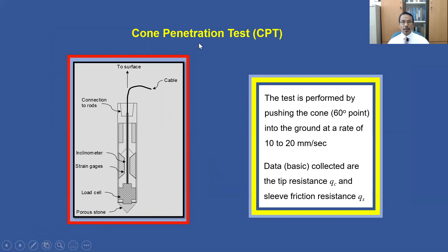Another method that can be employed is what we call Cone Penetration Test, CPT, or some people call it the Dutch cone. Principally, a cone like this is pushed into the ground at a rate of 10 to 20 mm per second. Let's take a look at the schematic diagram of a cone here.